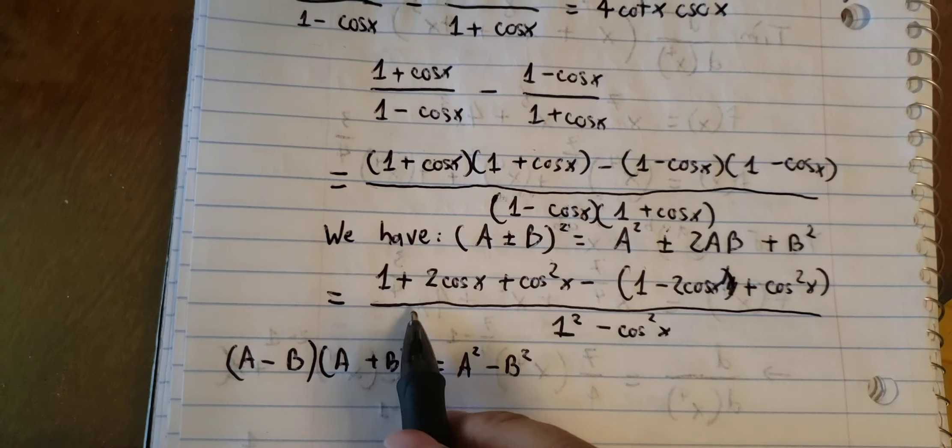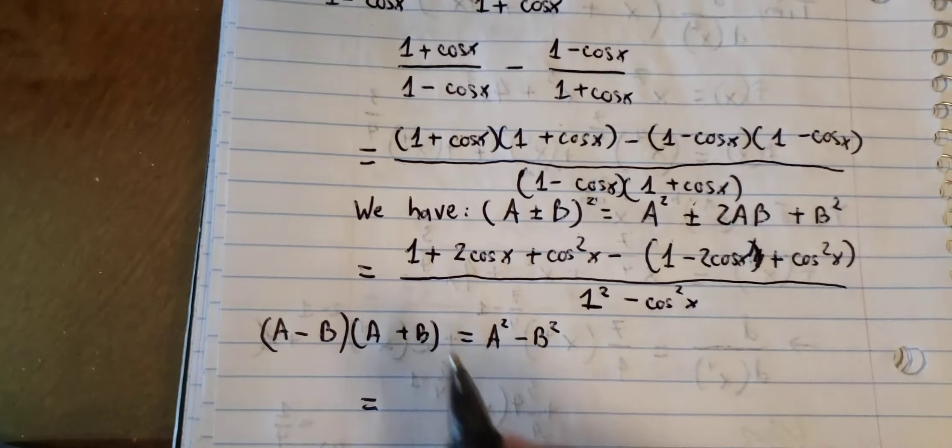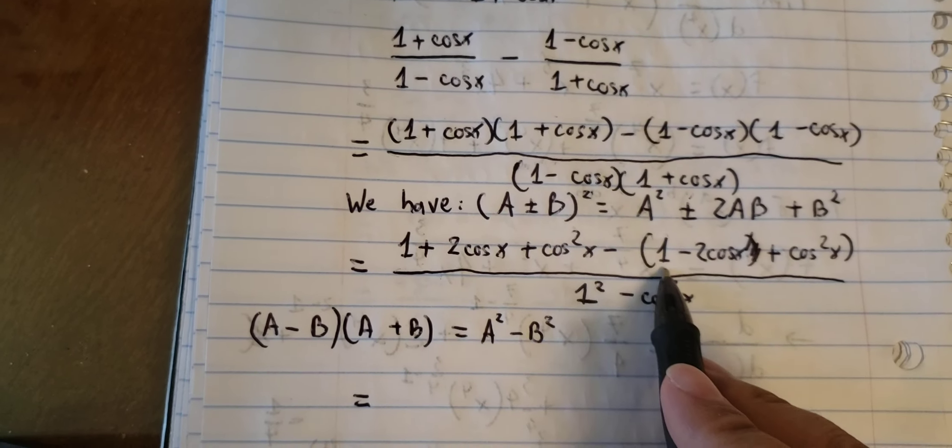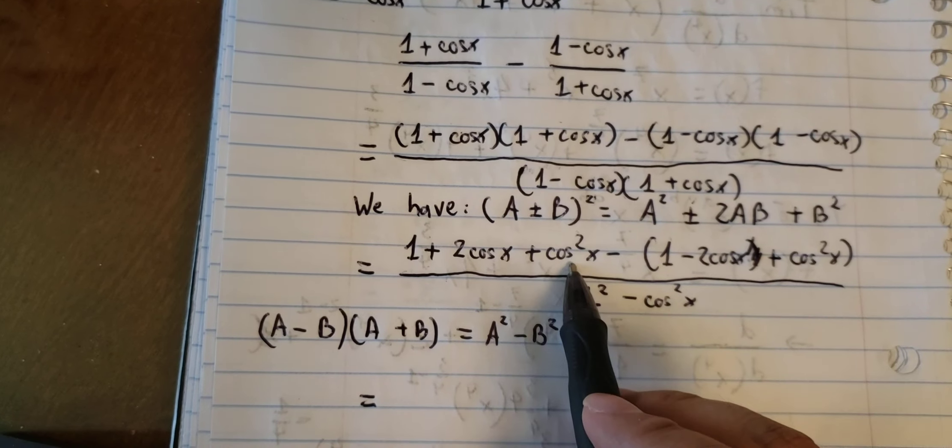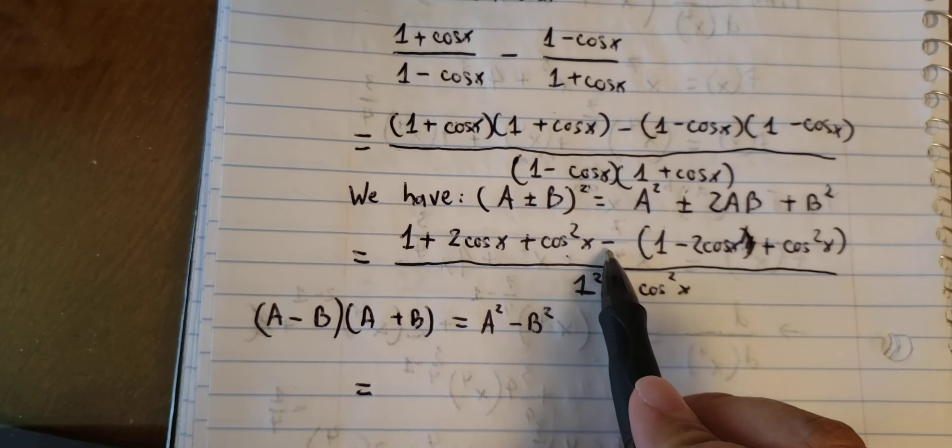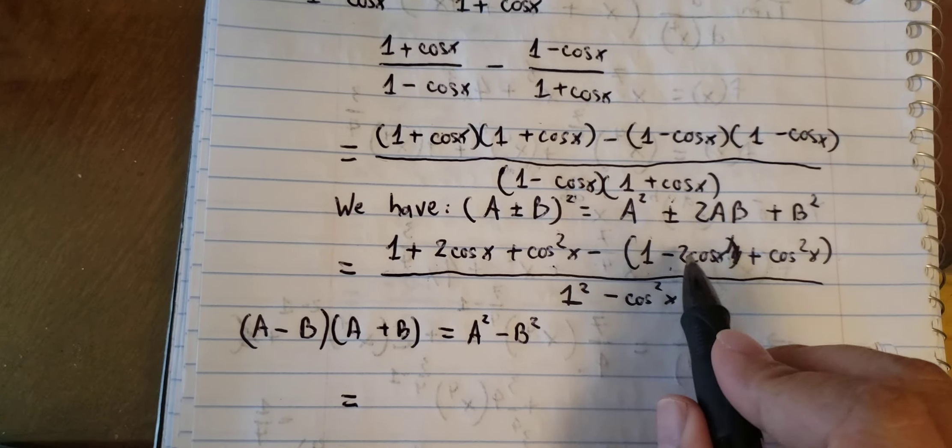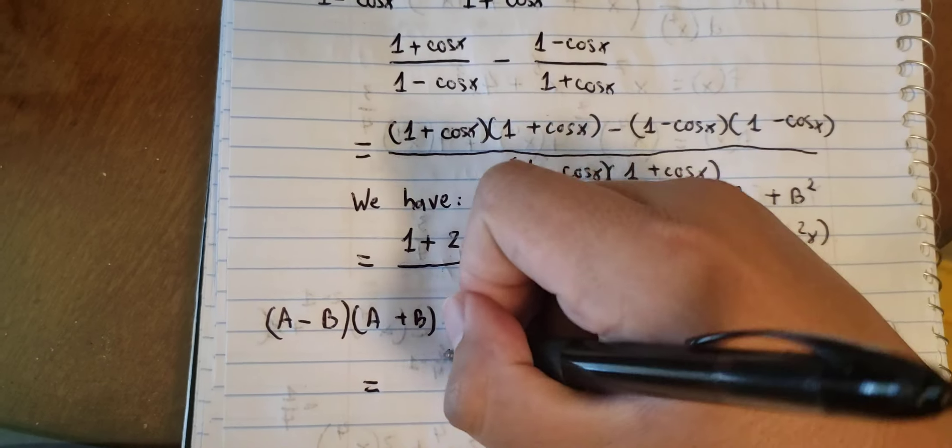Now we can simplify our numerator. 1 minus 1, we cancel. Cos x squared minus cos x squared, we cancel. Negative and negative, we have positive. So 2 plus 2, we have 4.